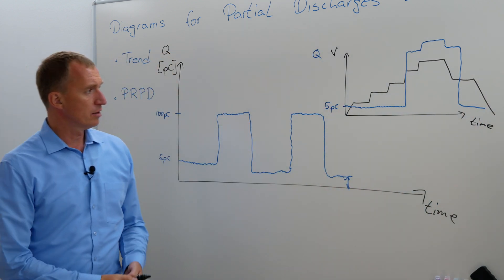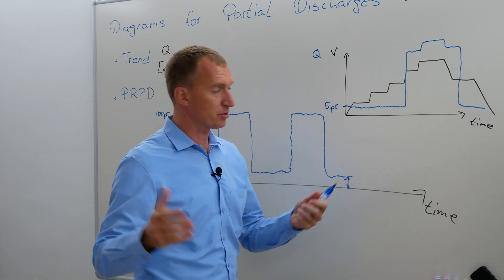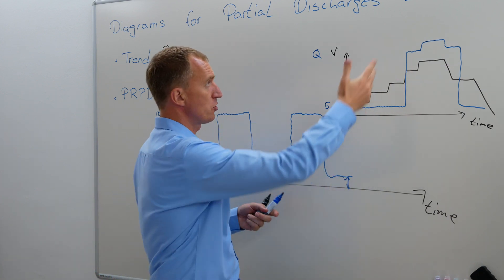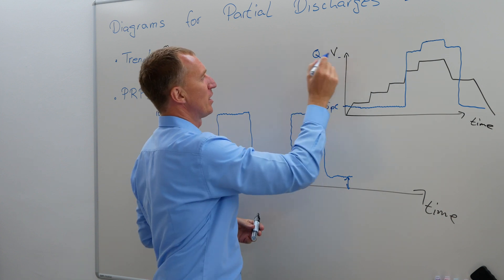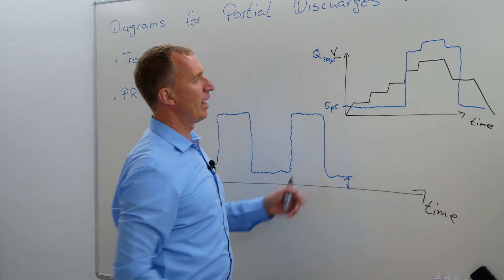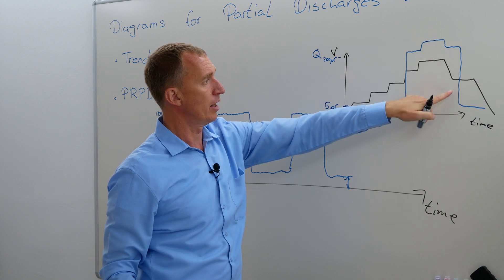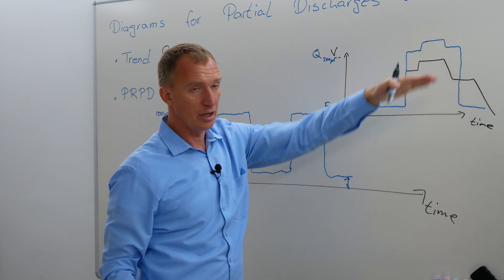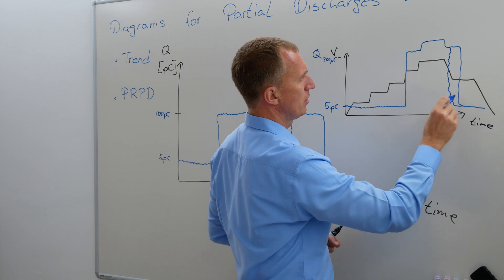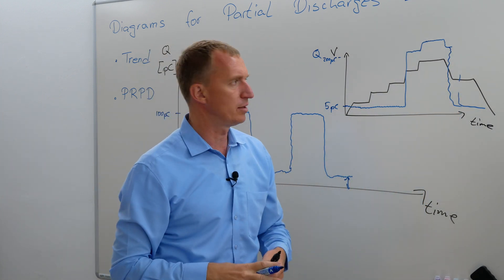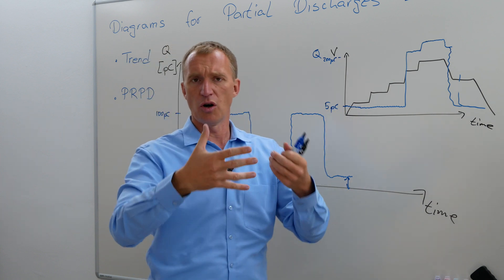We had our first voltage level, no PD. Second voltage level, no PD. Third voltage level, no PD. Fourth voltage level, bam, we had partial discharges and they were quite high, around 200 picocoulombs. And when we went to the next voltage level it was even higher, and then it went down a little bit. And then after a while when we lowered the voltage it died down. There's usually hysteresis, so maybe it would have gone down here already. This would be a representation on how to have a diagram of partial discharges, a trend.